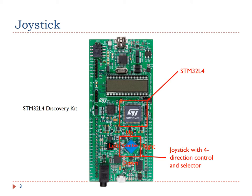The STM32L4 Discovery Kit has a four-direction joystick. The user may push the joystick in one of four directions: up, down, left, and right. The user may also press the center of the joystick. The center is often used as a selector.